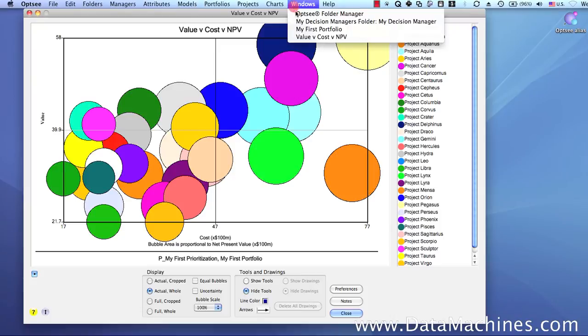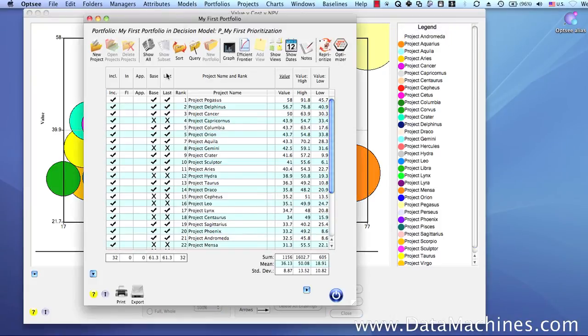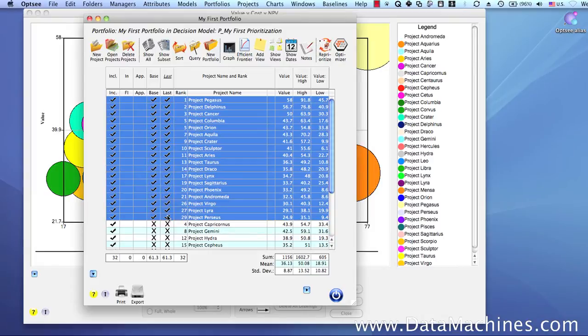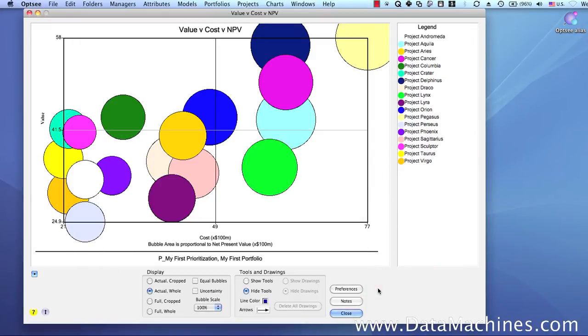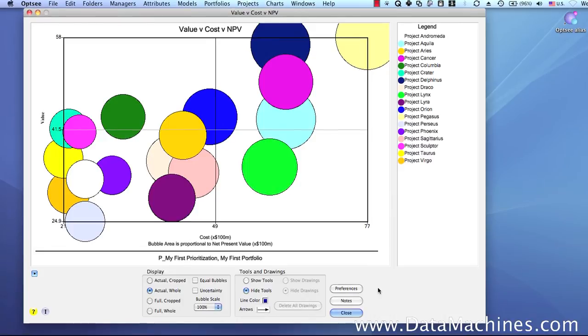Let's bring the portfolio form to the front and sort by the last optimization. Next, let's select the projects that were chosen in the last optimization and then click Show Subset. Now, if we click back to the bubble chart, we can see that only the selected projects in the subset are displayed.